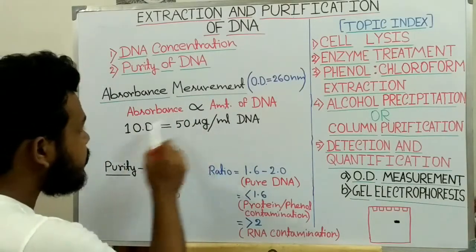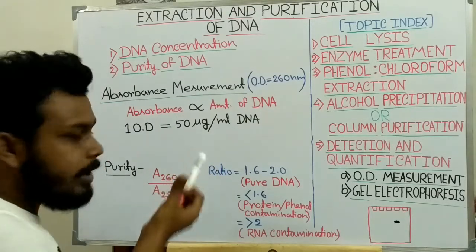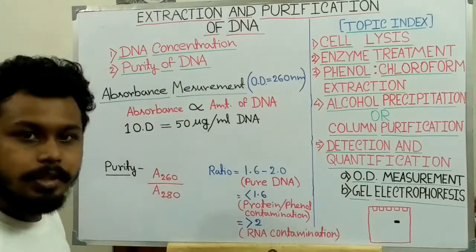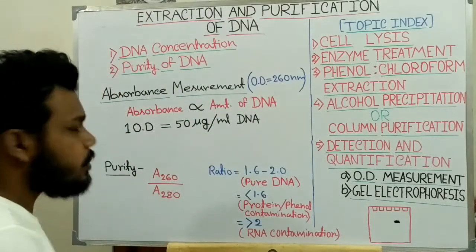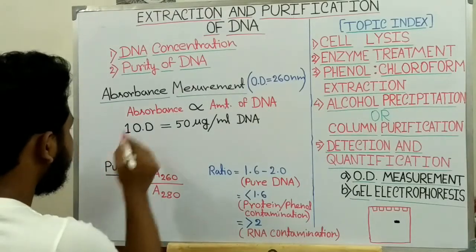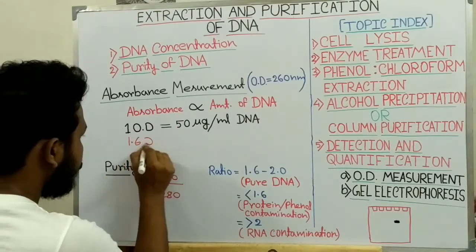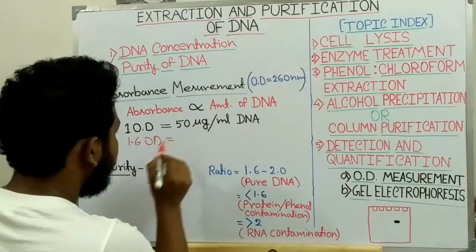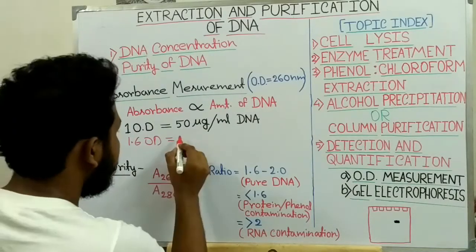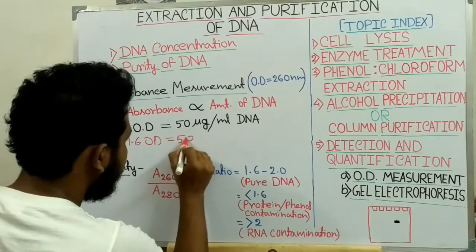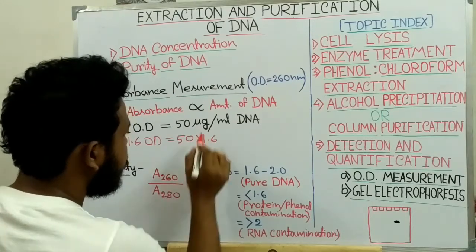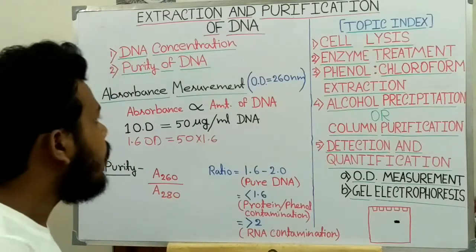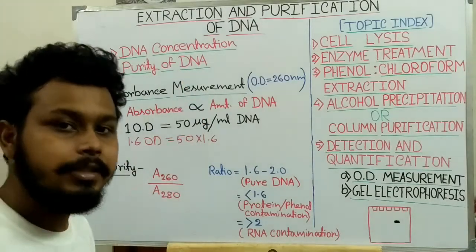From this standardized value, we can calculate the DNA concentration of our DNA solution. For example, suppose we get 1.6 OD from our purified DNA solution. Then the DNA concentration is 50 multiplied by 1.6 microgram per ml. In this way, we can get the DNA concentration of our purified DNA solution.